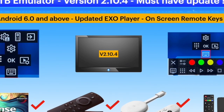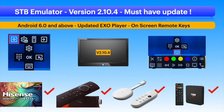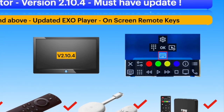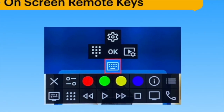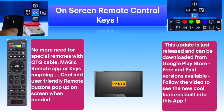STB Emulator version 2.10.4 is a very good update. The best part is all the remote control keys pop up on screen whenever required to navigate, use the keyboard to make an entry, search, and access many other menu options. This update has just been released and can be downloaded from the Google Play Store in free or paid versions. It can be installed directly on any Android device or sideloaded on Fire Stick and other devices.